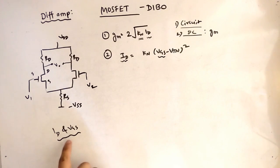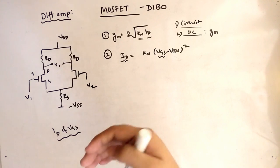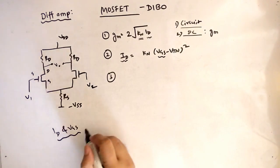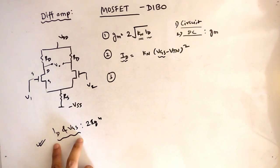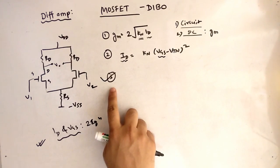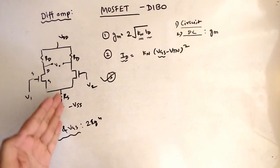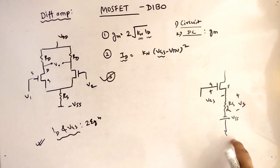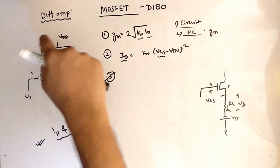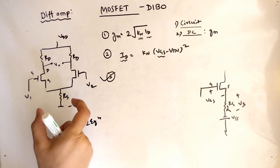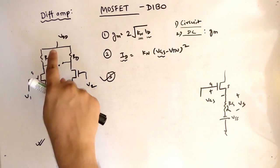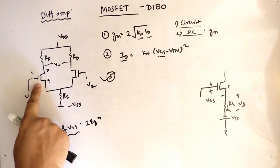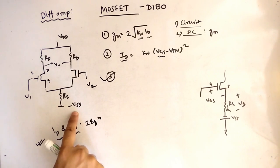Since both id and vgs are unknown, we cannot solve them with just one equation — two unknowns require two equations. So we need a second equation. To get it, we break the circuit into two halves: MOSFET one circuit and MOSFET two circuit. When we break the circuit, VDD, RD, V1, and VSS all remain as they are in their respective halves.